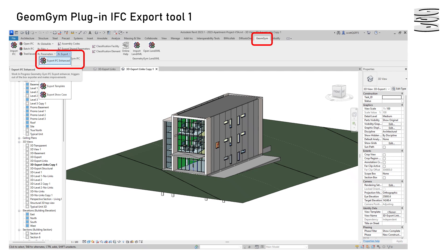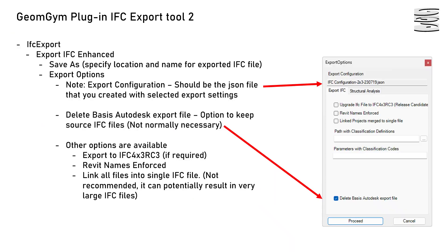Here is where the Geometry Gym toolbar is and the enhanced IFC export button. It will then take you to this dialog box. It's important to make sure that the export configuration file that you set up previously has been selected and it will be used.